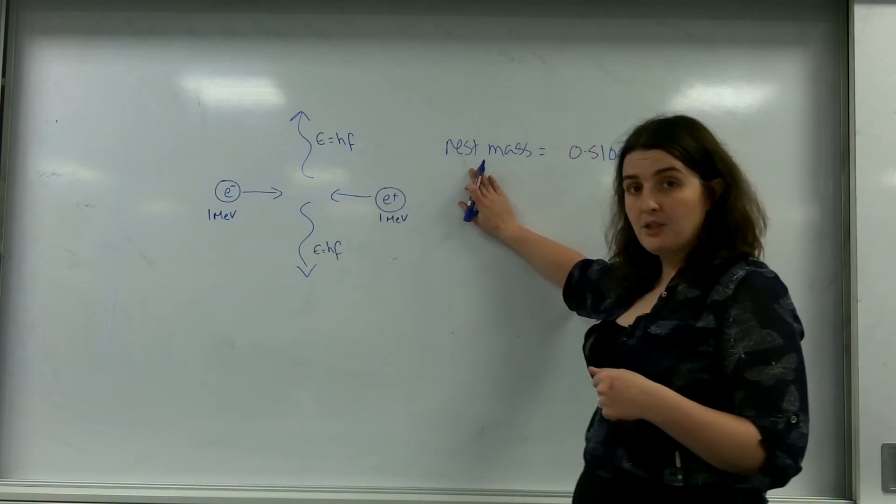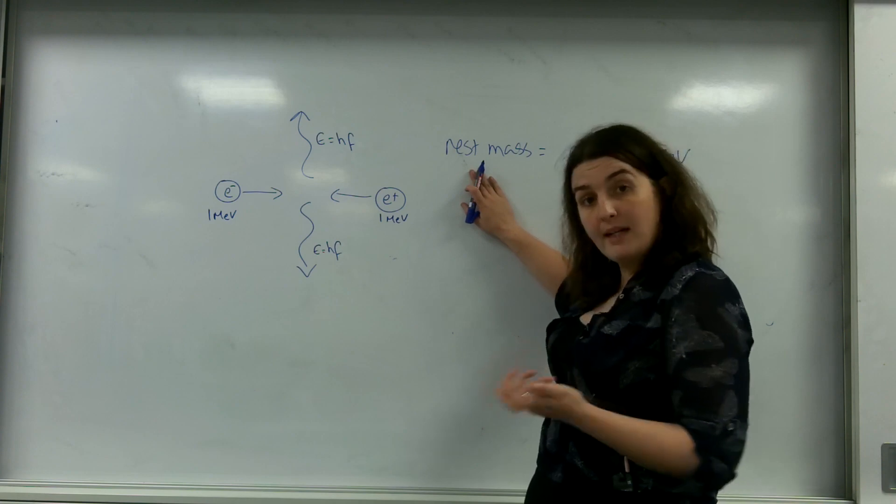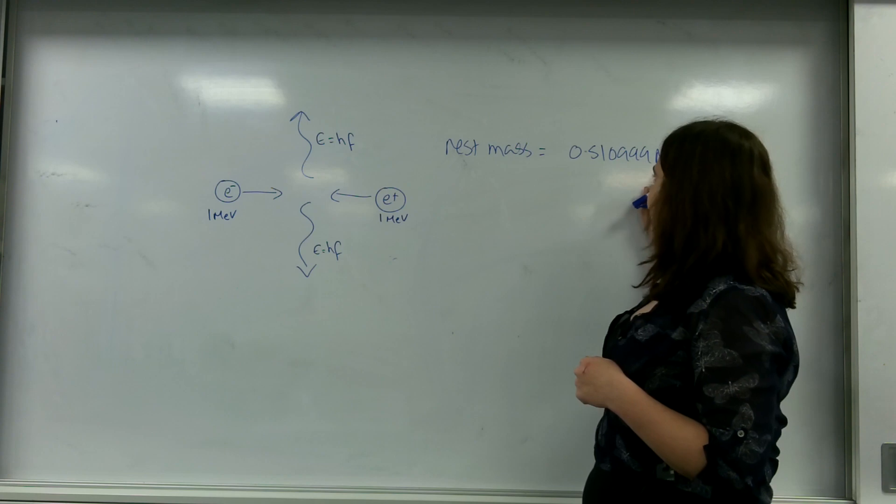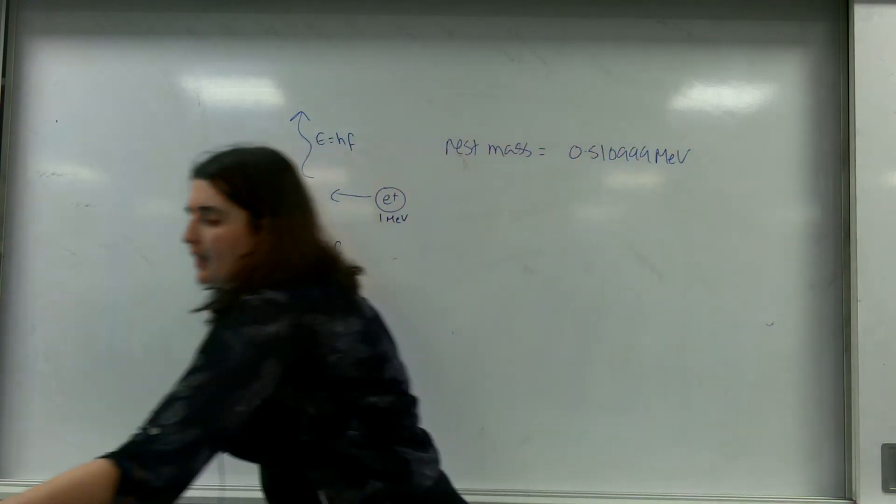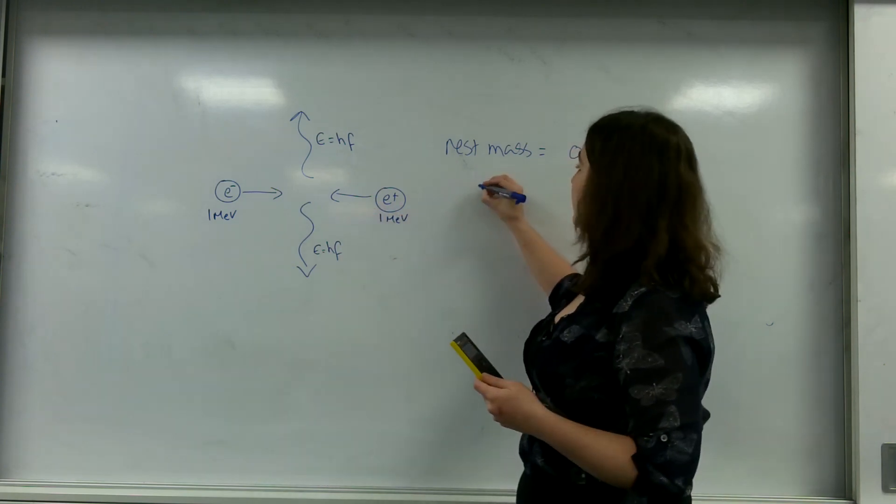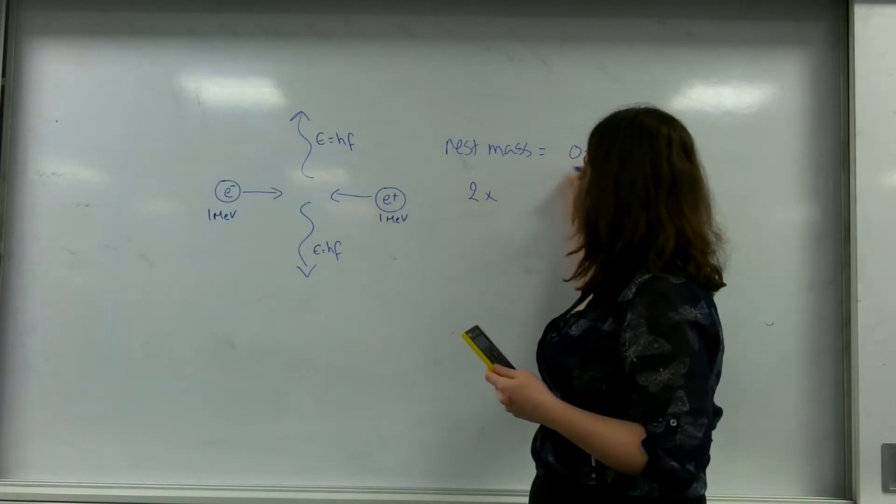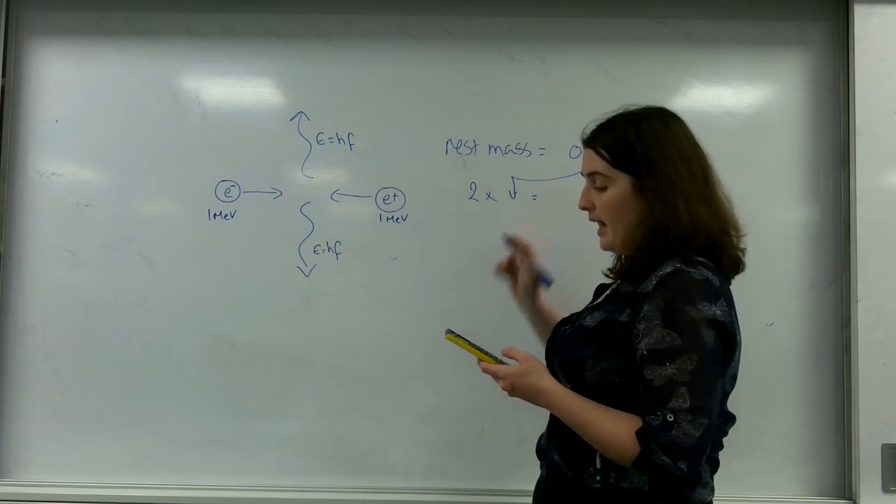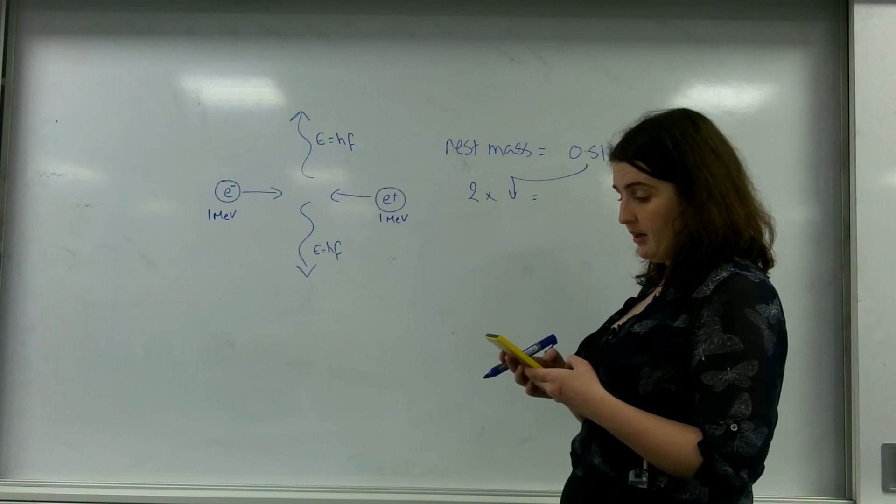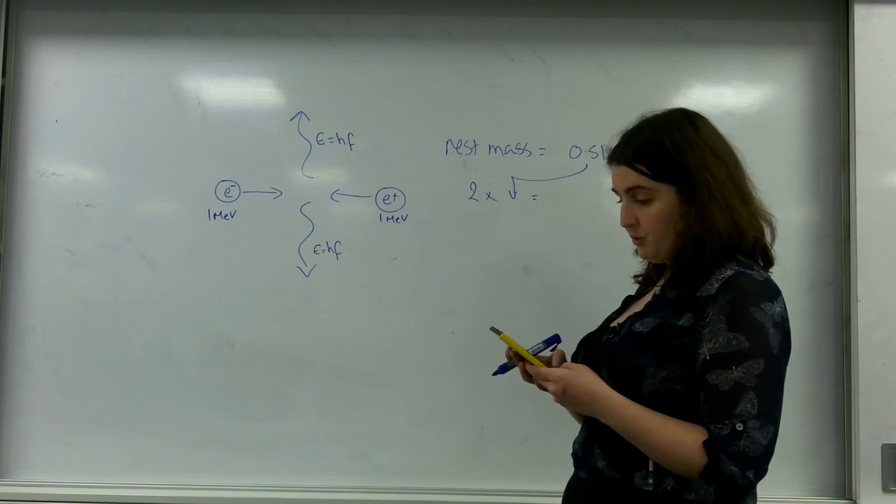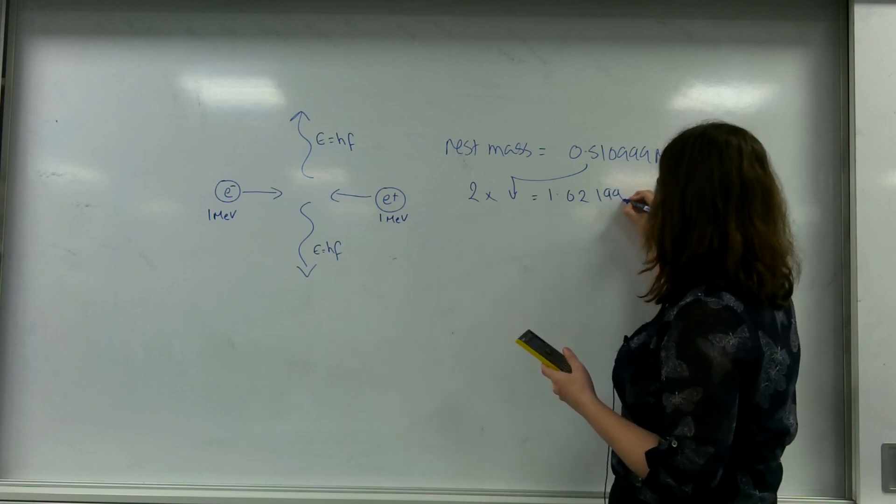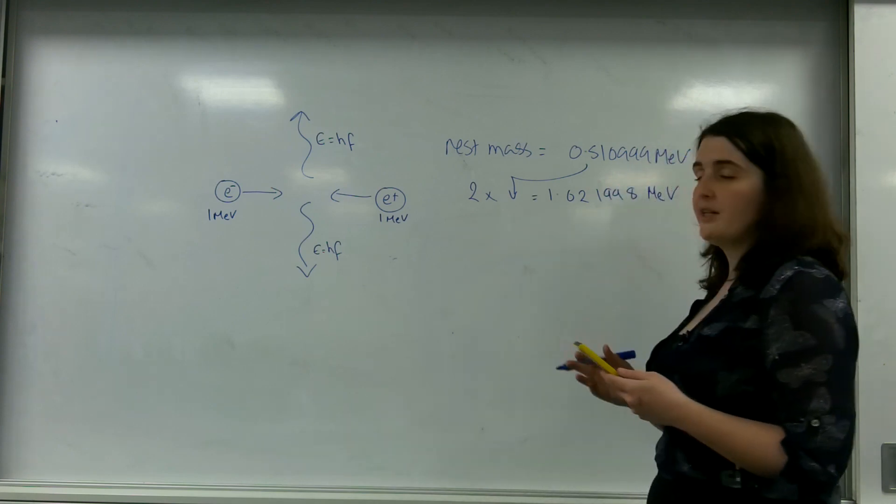So I know the rest mass of an electron, and therefore the rest mass of a positron, is 0.510999 mega electron volts, and that is found on your data sheet. I have got two of these. And that equals, so 0.510999 times 2, 1.021998 mega electron volts worth of energy.